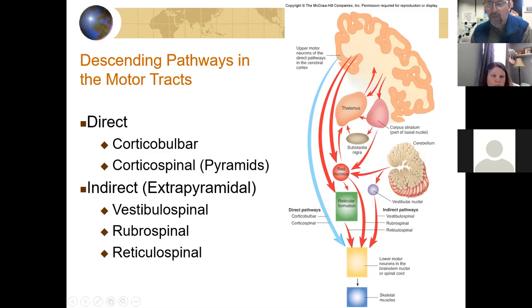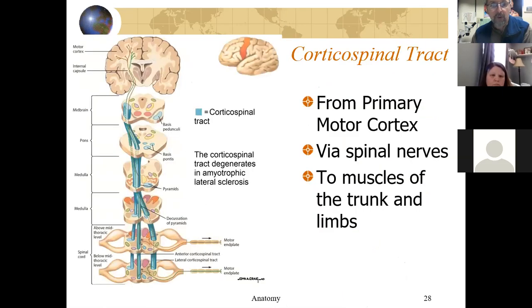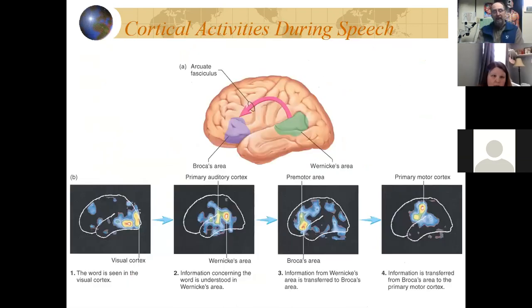Other motor activities are even more complex, like the motor activities that control speech, which involves communication from Wernicke's area, Broca's area, visual areas, and memory areas — so it gets even more complex when talking about something like speech.